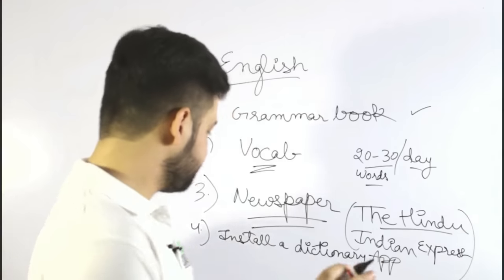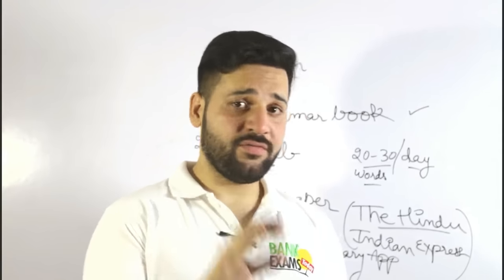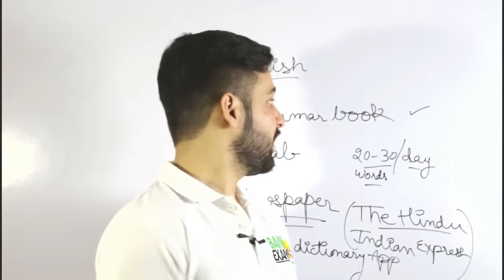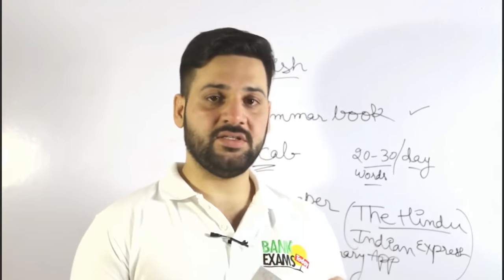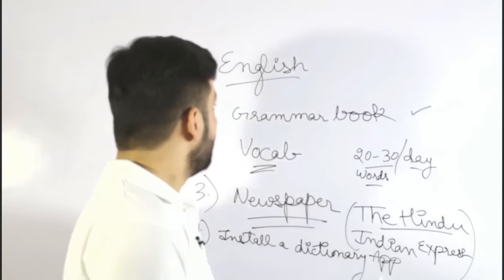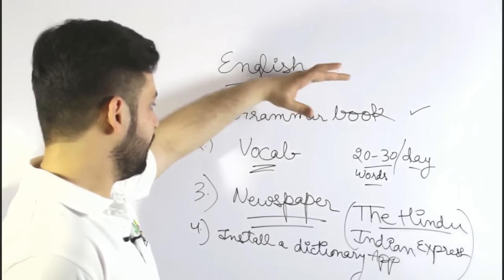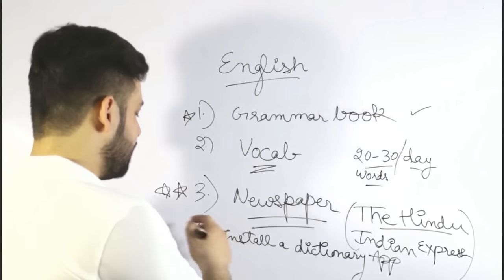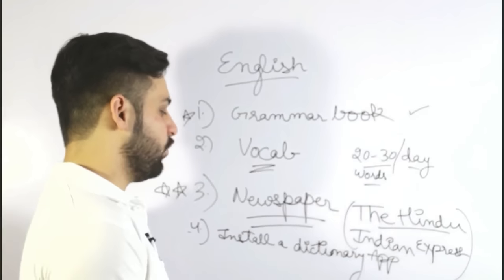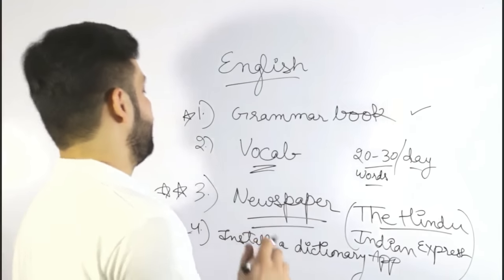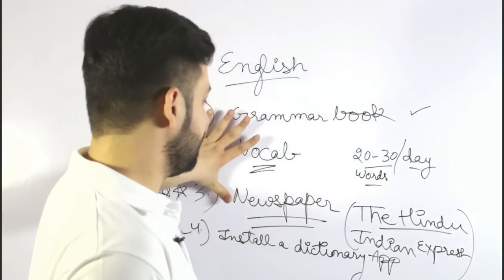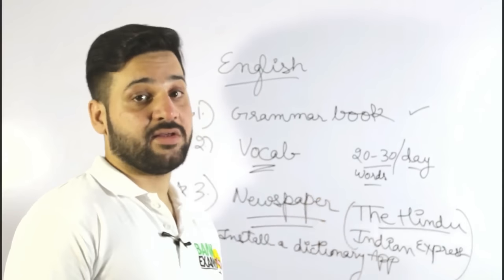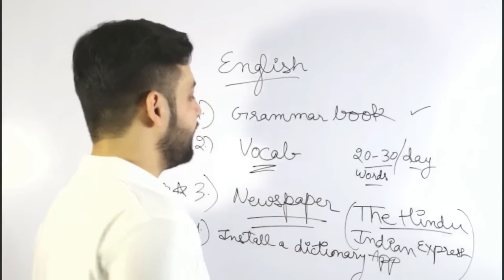For the reading comprehension part, I have an RC Workbook available for free on bankexamstudy.com — it contains exam-level RCs and will help you a lot. To summarize the English section: the grammar book is most important, followed by the newspaper. The dictionary is optional. Also follow bankexamstudy.com, where I post two or three articles a day focused only on the English section.